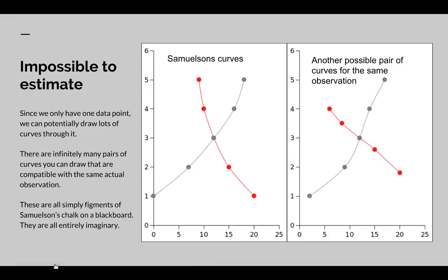Why is it impossible to estimate? It's because there are infinitely many pairs of curves you can draw going through this observed quantity, 3 and 12. Now, Samuelson makes it appear that you've got these extra data points, but you can't actually observe those data points. These are imaginary data points, or these are imaginary points. He's just dreamt them up to draw them on our blackboard.